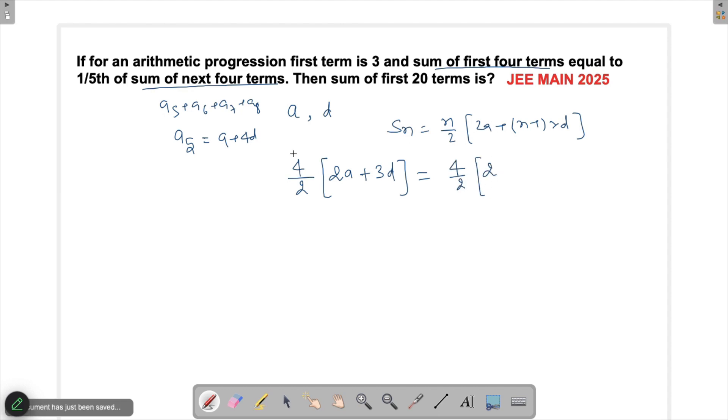Since this is one-fifth, we can cancel 4/2 from both sides and multiply by 5. So 5(2a + 3d) equals 2(a + 4d) + 3d.